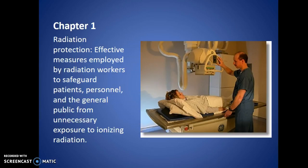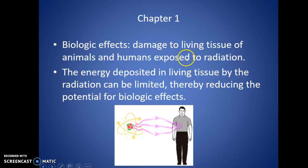Biologic effects: what you need to know is that this is damage to living tissue of animals and humans exposed to radiation. It has to be living tissue — you won't get biologic effects with things like x-ray metal or industrial radiation. Energy deposited in living tissue by radiation should be limited, thereby reducing the potential for biologic effects. The less radiation, the less biologic effects — it's a straight-line definition.